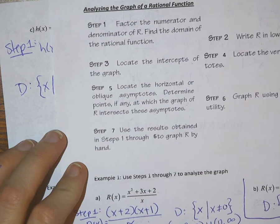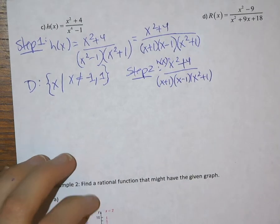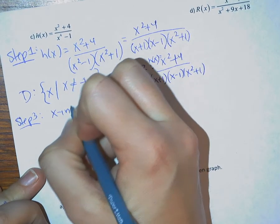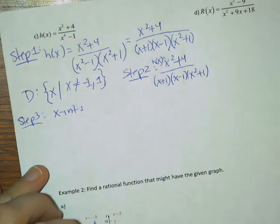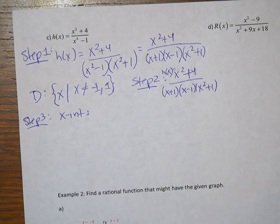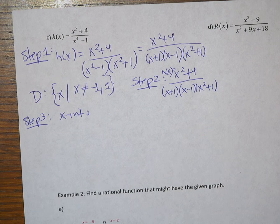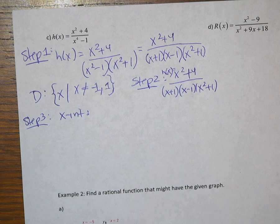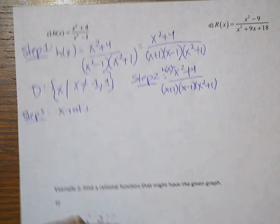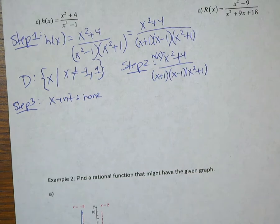Step 3 is to locate the intercepts of the graph. Start with x intercepts. So we know that x intercepts are where y equals 0, which is where our numerator equals 0. If we look at this numerator however, we see that if we try to set this equal to 0, we are going to end up with negative 4 equals x squared. When we square root that we are going to come up with imaginary answers, meaning we have no real x intercepts. So we would say that we have none.